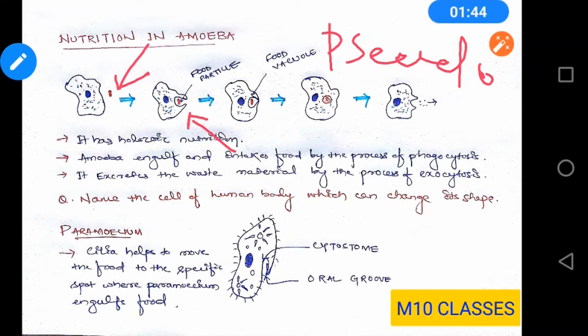After assimilation takes place, the waste material formed in the body of amoeba gets excreted out by the process of exocytosis, as seen in the figure.